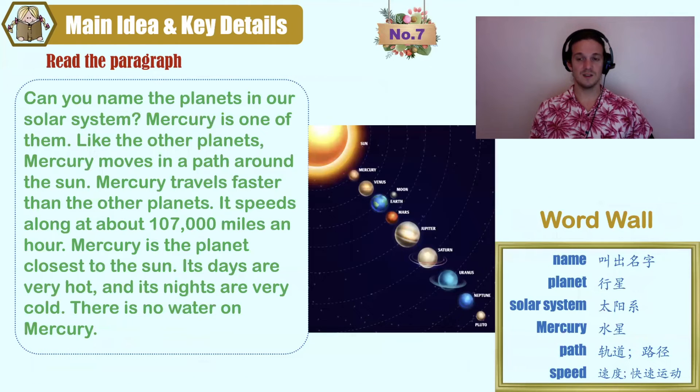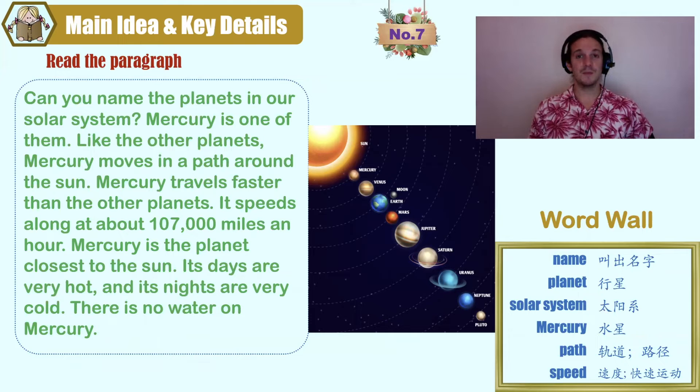Number seven. Key words: name, planet, solar system, mercury, path, speed.